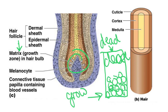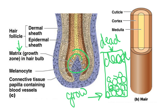The hair follicle has this matrix where the hair is growing. Hairs also have an associated sebaceous gland where oil is released along the hair shaft, and a little muscle called the erector pili muscle. When that muscle contracts it gets shorter, which pulls the hair so it stands straight up — that's what gives us goosebumps.